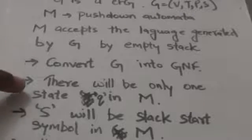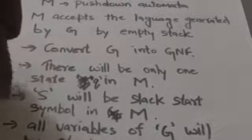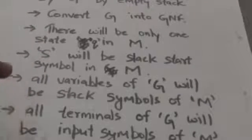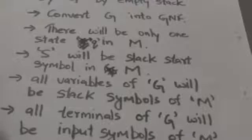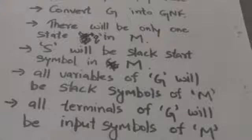First of all, we will convert this grammar G into GNF (Greibach Normal Form). Pushdown Automata M will have only one state Q. The start symbol of grammar G will be the stack start symbol in Pushdown Automata M. All variables of grammar G will be stack symbols of Pushdown Automata M, and all terminals of grammar G will be input symbols of Pushdown Automata M.